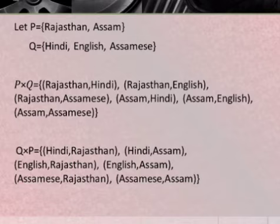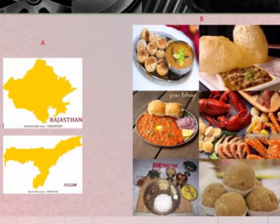Whereas Q into P equals: Hindi Rajasthan, Hindi Assam, English Rajasthan, English Assam, Assamese Rajasthan, and Assamese Assam.